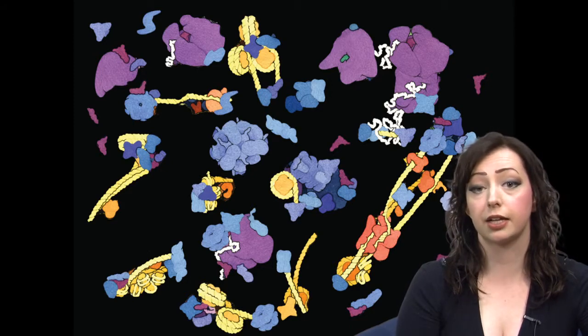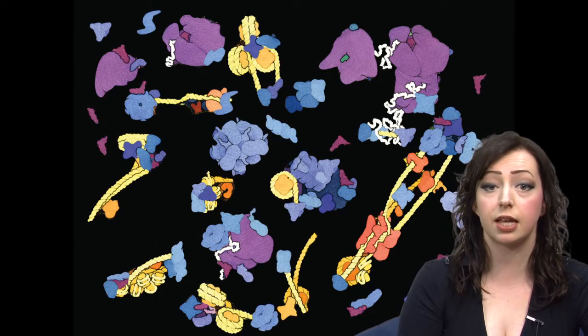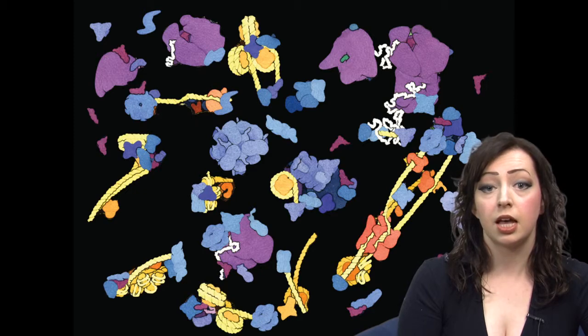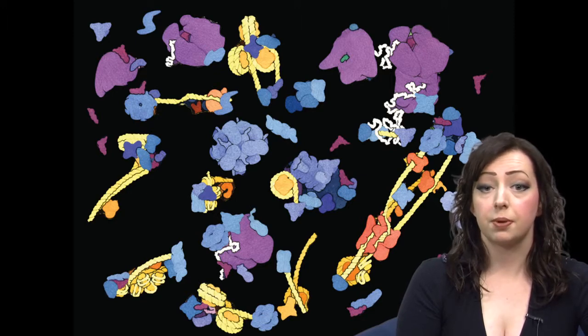To prepare cell extracts, we take 50 mils of an E. coli culture and harvest the cells by centrifugation. The resulting cell pellet is then resuspended in one mil of a physiologically relevant buffer. The cells are lysed by sonication.